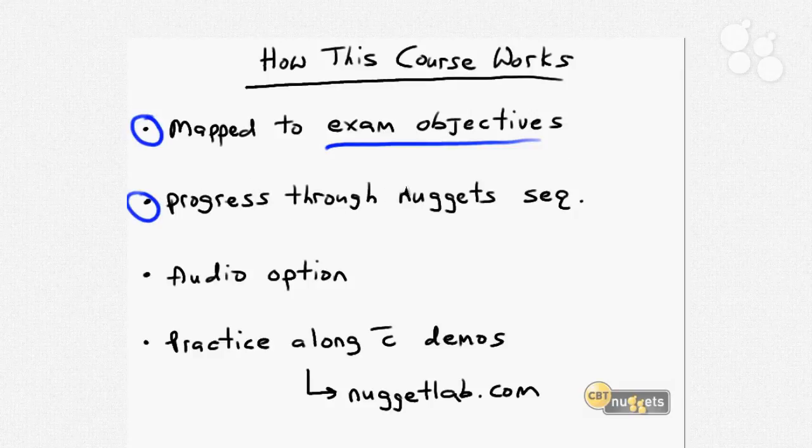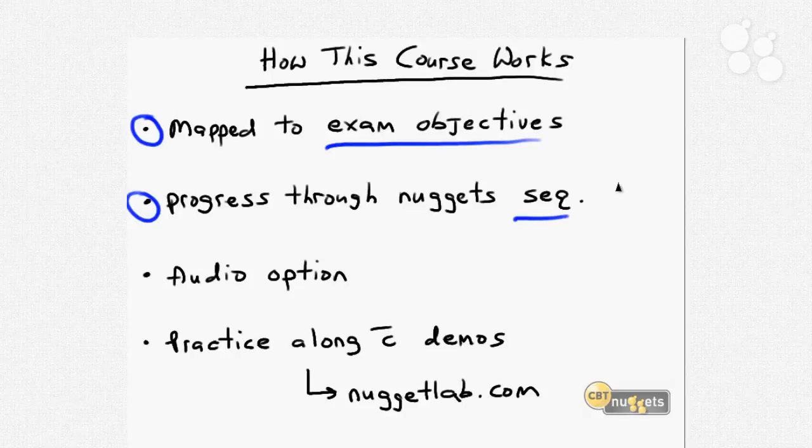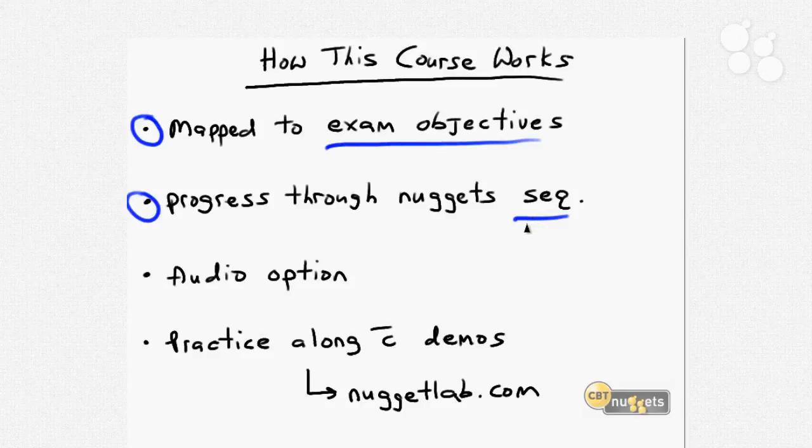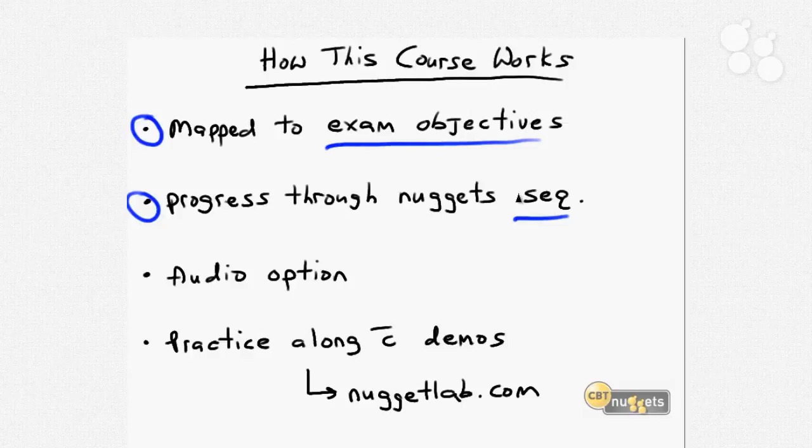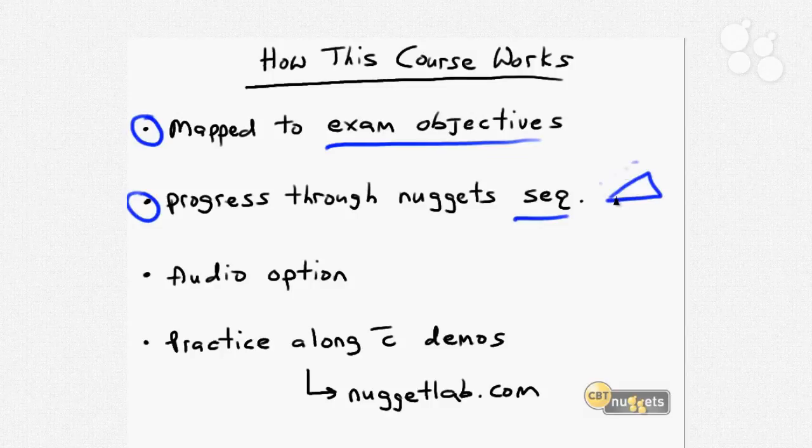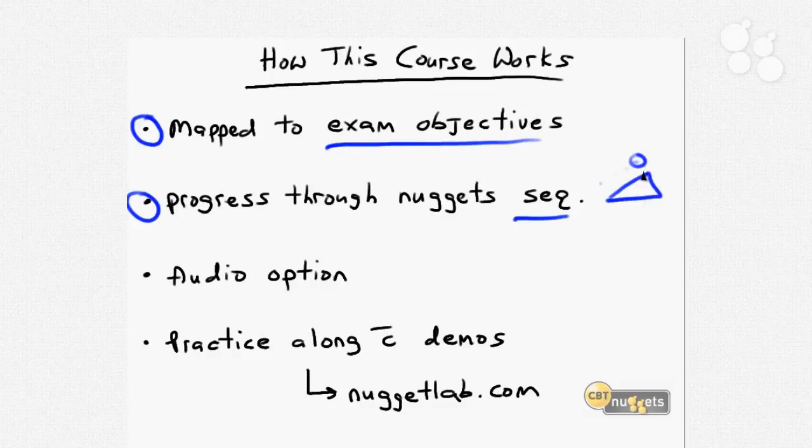Another suggestion is that you progress through the nugget movies sequentially. I know there's a temptation to get to the good stuff and skip around, but you're going to lose the instructional flow by doing that. If you don't watch the movies sequentially, we'll be taking for granted later in the course skills that were fully fleshed out and introduced earlier.